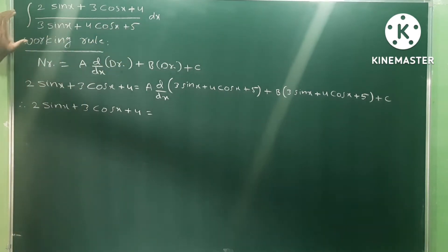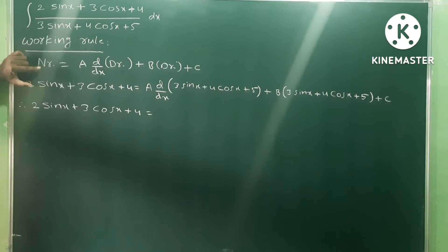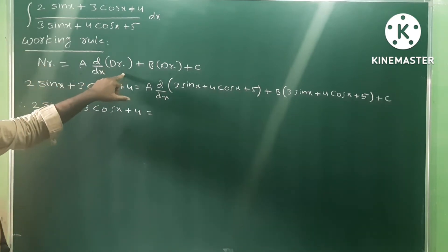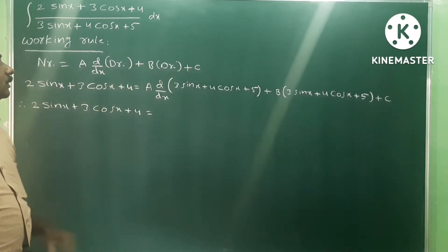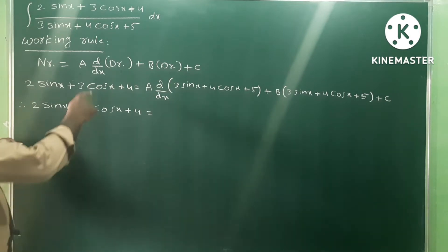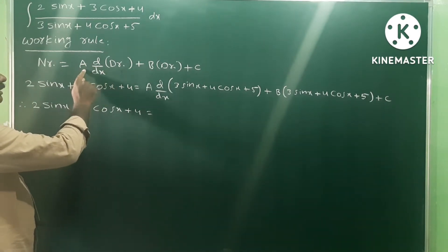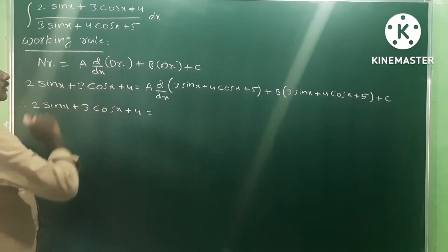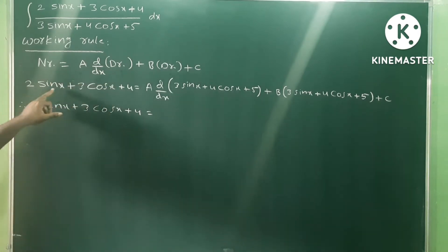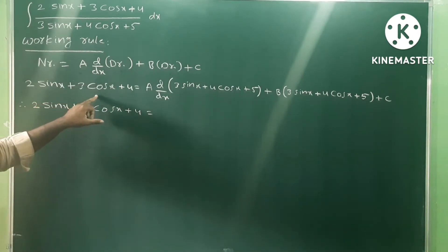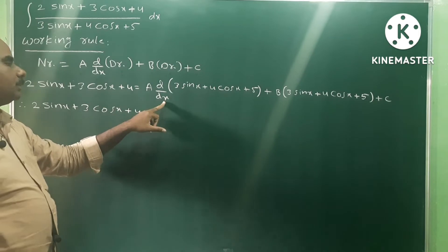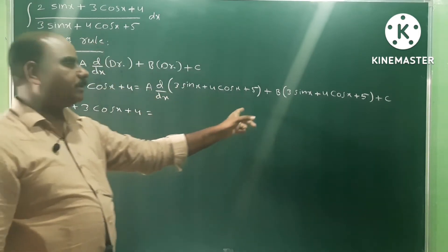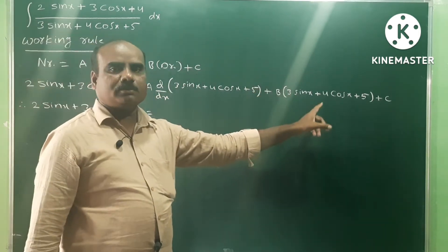The working rule states: numerator = a · d/dx(denominator) + b · denominator + c. Here the derivative of the denominator gives either a sine or cosine term. So the numerator 2sinx + 3cosx + 4 is expressed as a · d/dx(denominator) + b · denominator + c.